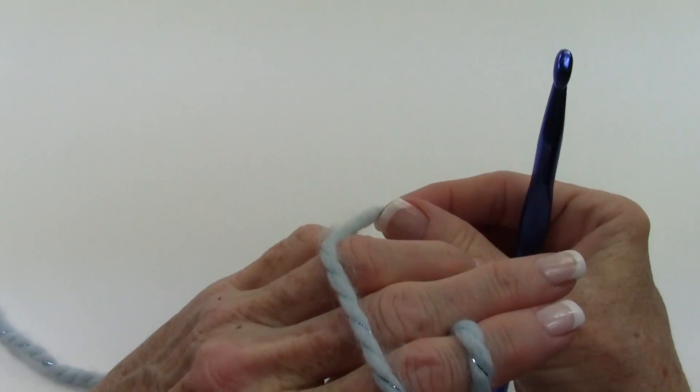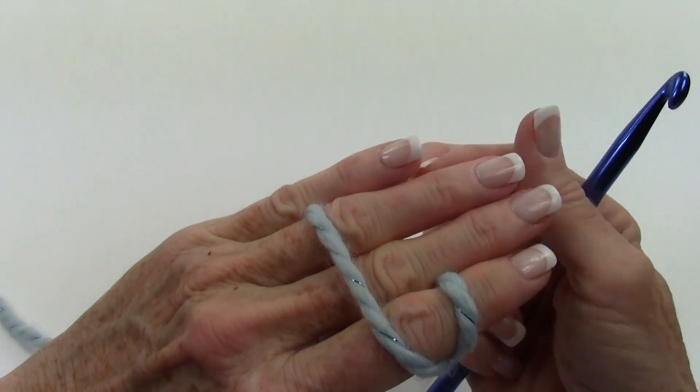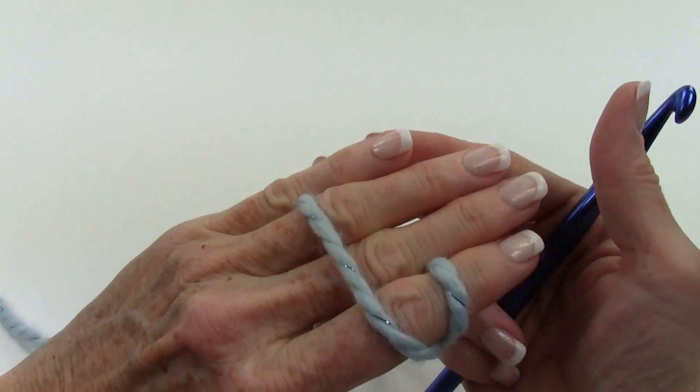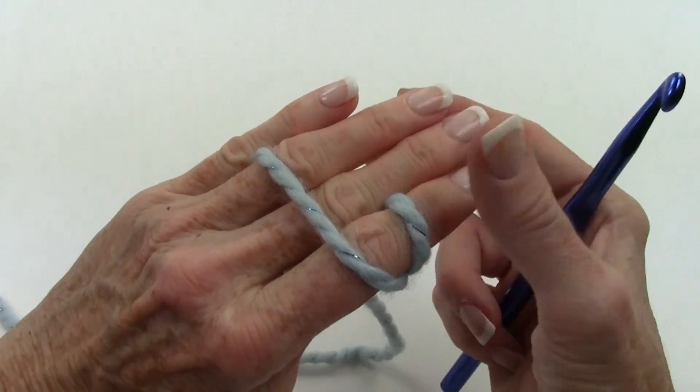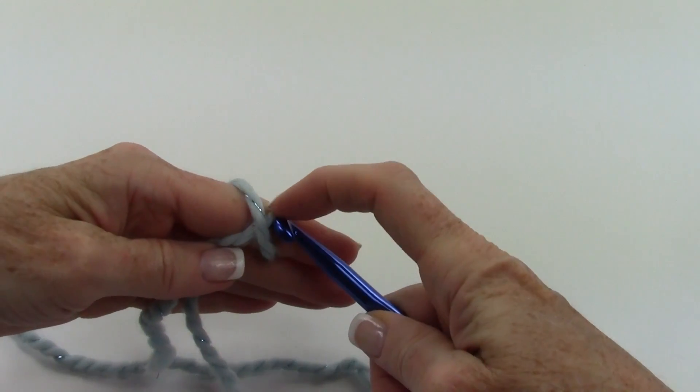Then I'm going to hold it across the back of my hand like this and put it between my baby finger and the next finger. So I'm going to be holding it across the back like this. I come back to this direction.